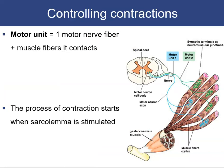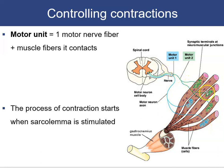To control contractions, we need to understand the motor unit: one motor nerve fiber and all the individual muscle fibers it makes contact with. Contraction begins when the sarcolemma is stimulated. For example, one nerve fiber stimulates two muscle fibers; another stimulates three. When an action potential comes down one nerve, it contracts those specific fibers.